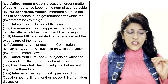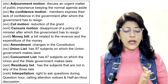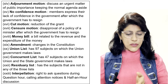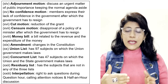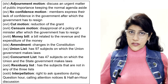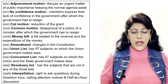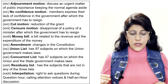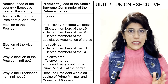No confidence motion — members express lack of confidence in the government, after which the government has to resign. Cut motion — reduction of the grant. Censure motion — disapproval of a policy of a minister, after which the minister or government has to resign. Money bill — a bill related to the revenue and expenditure. Amendment — changes in the Constitution. Union List has 97 subjects on which the union government makes laws. Concurrent List has 47 subjects on which both union and state government make laws. Residuary list has subjects not in any of the three lists. Interpolation — right to ask questions during question hour, calling attention notices, and half-hour discussion.